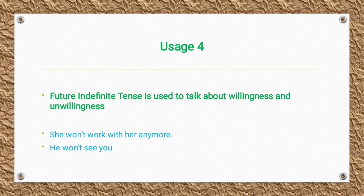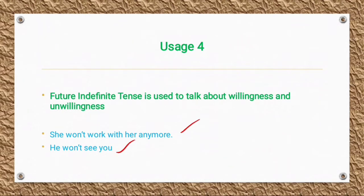Fourth usage: Future Indefinite Tense is used to talk about willingness and unwillingness. For example: 'She will not work with them anymore' shows unwillingness. 'He won't see you' means 'he will not see you.'